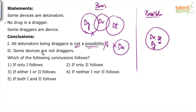Look at Conclusion 2: some devices are not draggers. This is a definite type of conclusion — Conclusion 1 was a possibility type, but Conclusion 2 clearly states some devices are not draggers. If you look at the basic diagram, it is true: these outside devices are not draggers. Only the fully shaded part represents devices which are draggers, while the partly shaded region shows there are some devices which are not draggers.